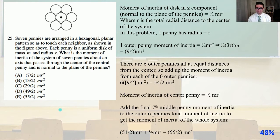1 outer penny moment of inertia equals 1.5 mr squared equals 1.5 times the quantity 3r squared. That's going to equal 9 halves mr squared. There are 6 outer pennies all at equal distances from the center. So add up the moment of inertia from each of the 6 outer pennies, and you have 6 times that quantity we just derived earlier, 9 halves mr squared. That equals 54 over 2 mr squared. The moment of inertia of the center penny equals 1.5 mr squared. Add the final 7th middle penny moment of inertia to this outer 6 pennies total moment of inertia to get the moment of inertia of the whole system. 54 over 2 mr squared plus 1.5 mr squared is going to equal 55 over 2 mr squared. And that is answer E. Those pennies add up.